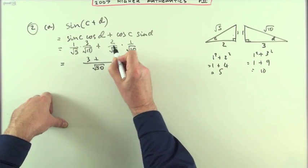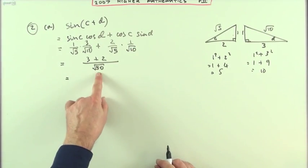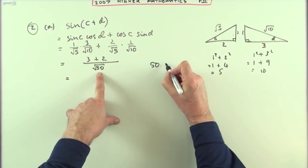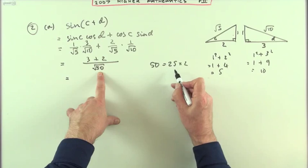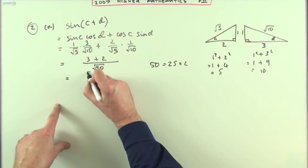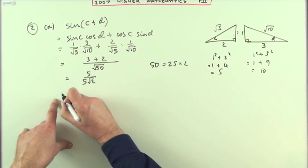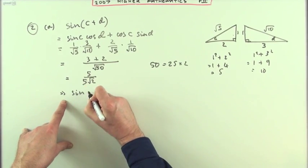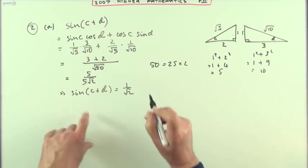1 times 3 is 3, 1 times 2 is 2. Now root 50, that's a 25 times a 2. So root 50 is the same as 5 root 2. So what I've got here is 5 on top and 5 root 2 underneath, which means that sin c plus d equals 1 upon root 2.